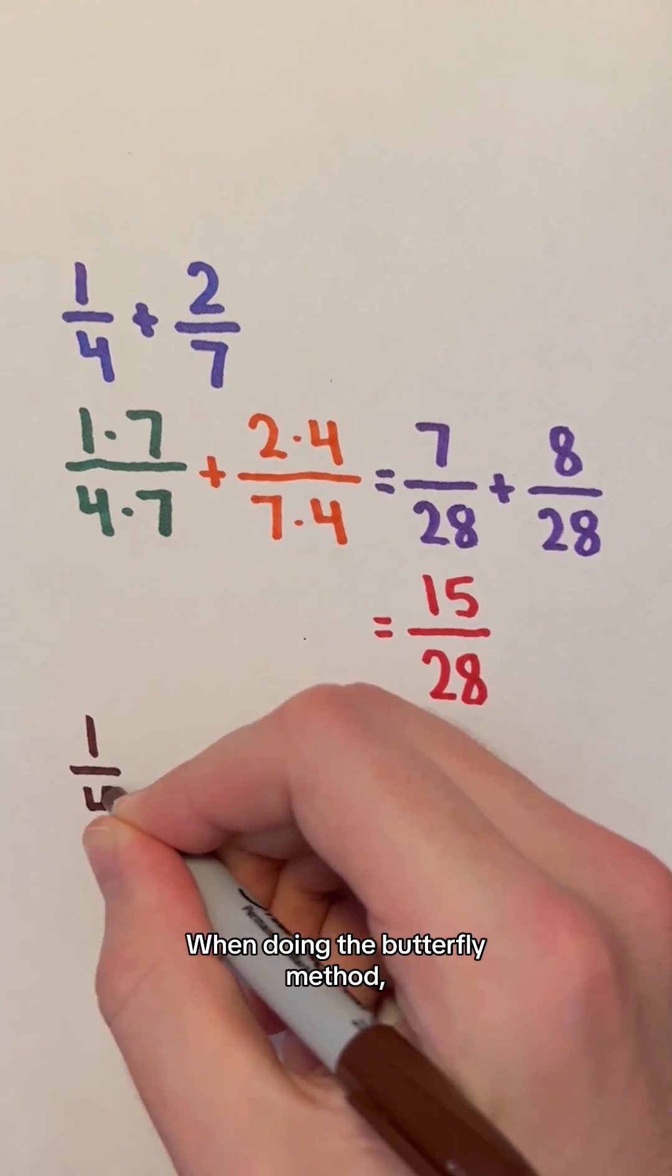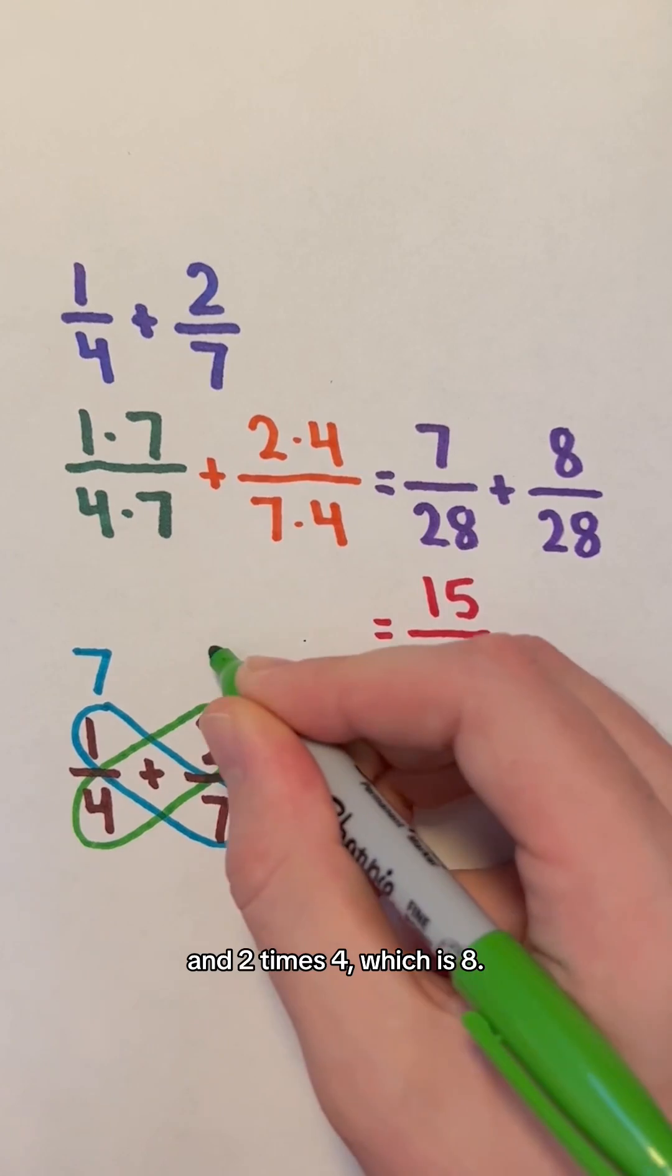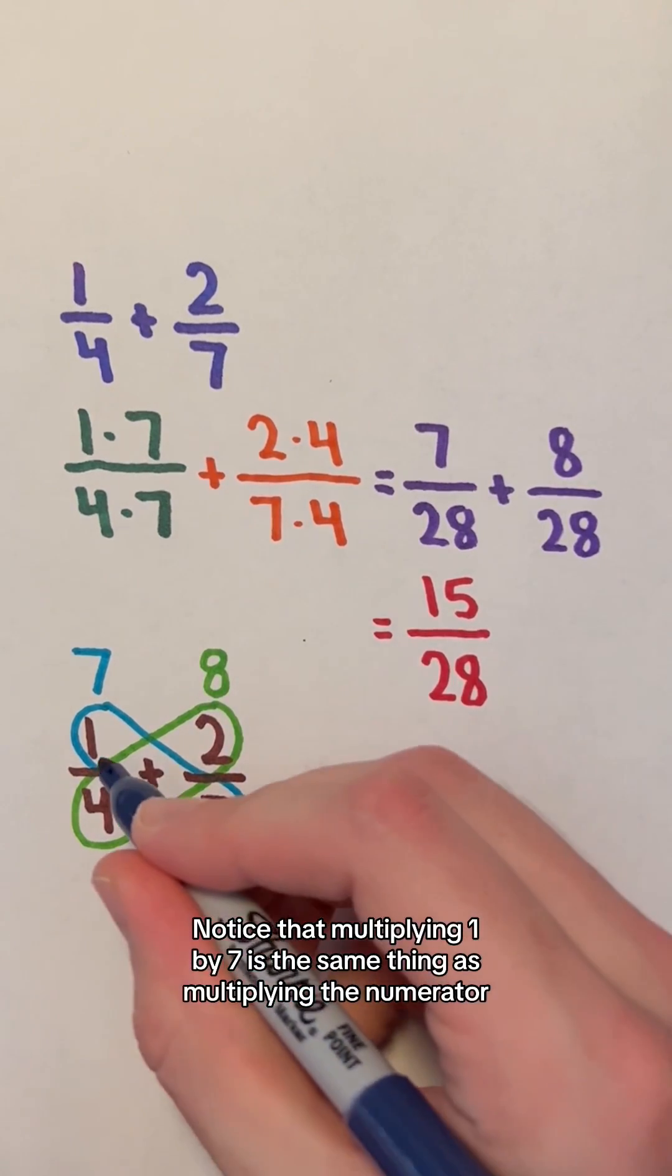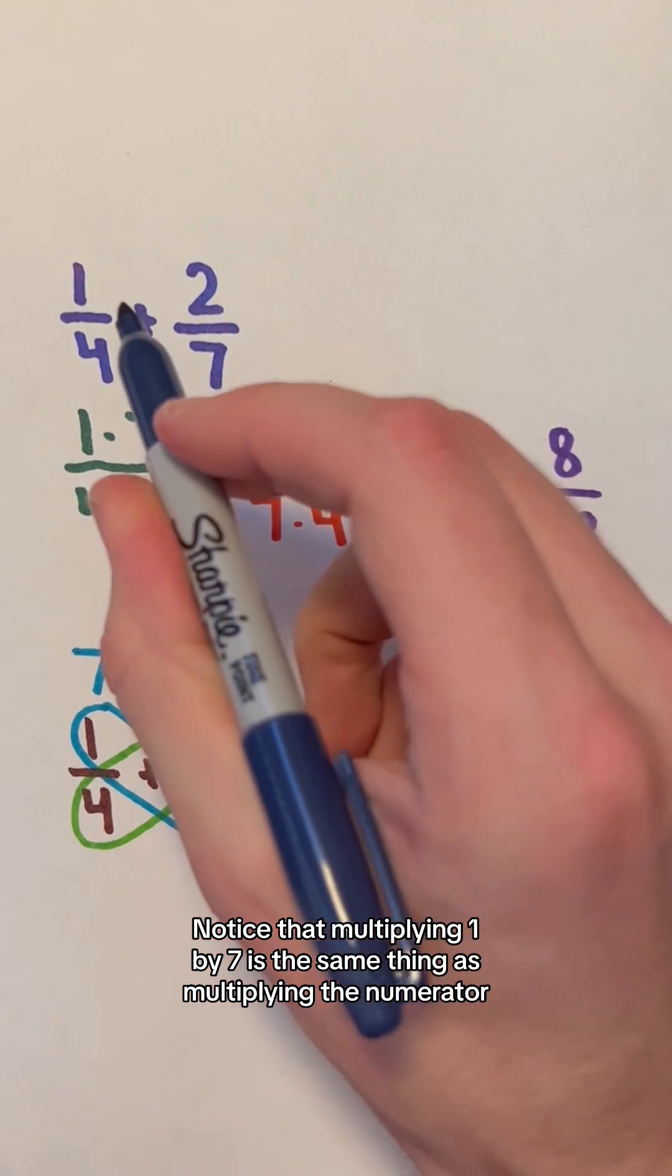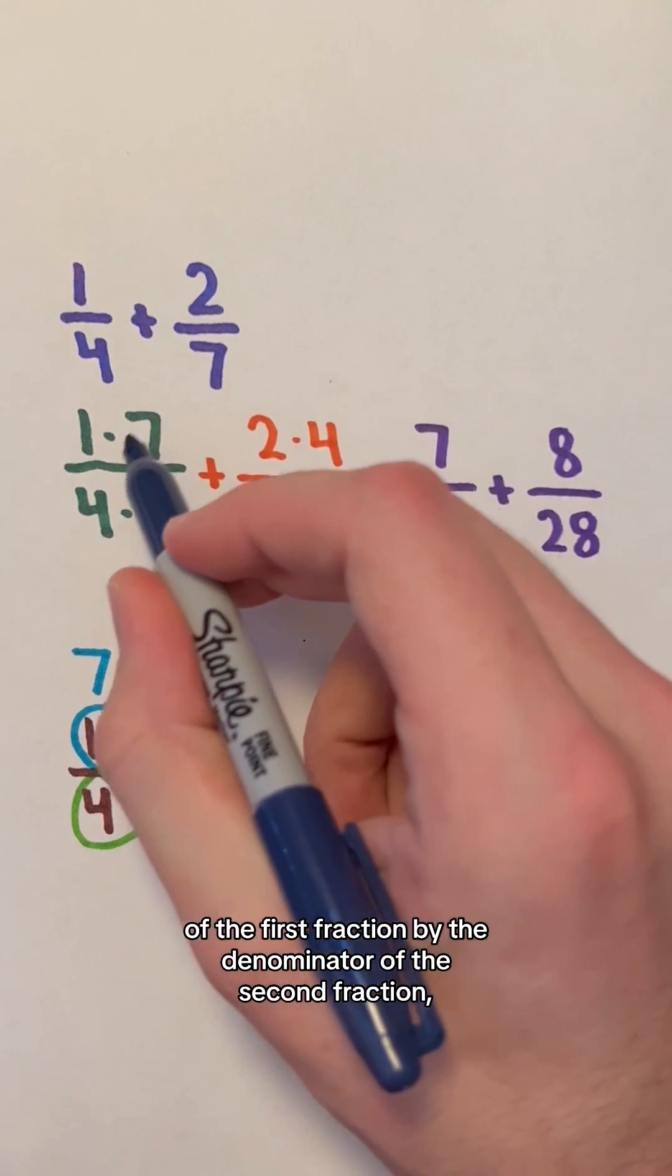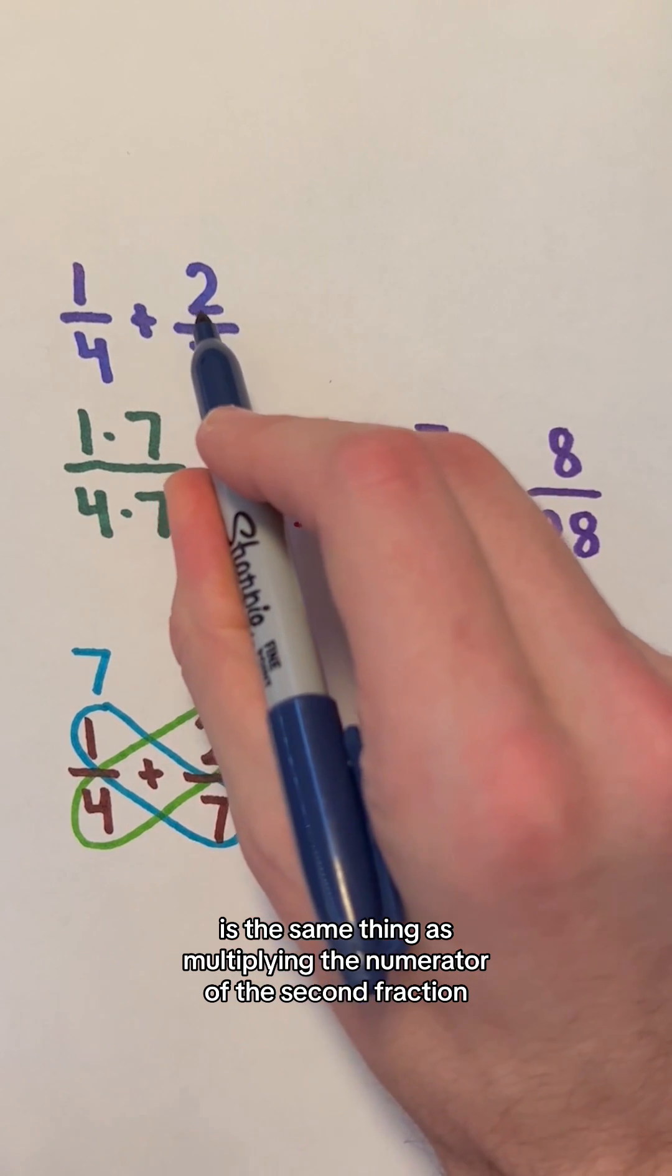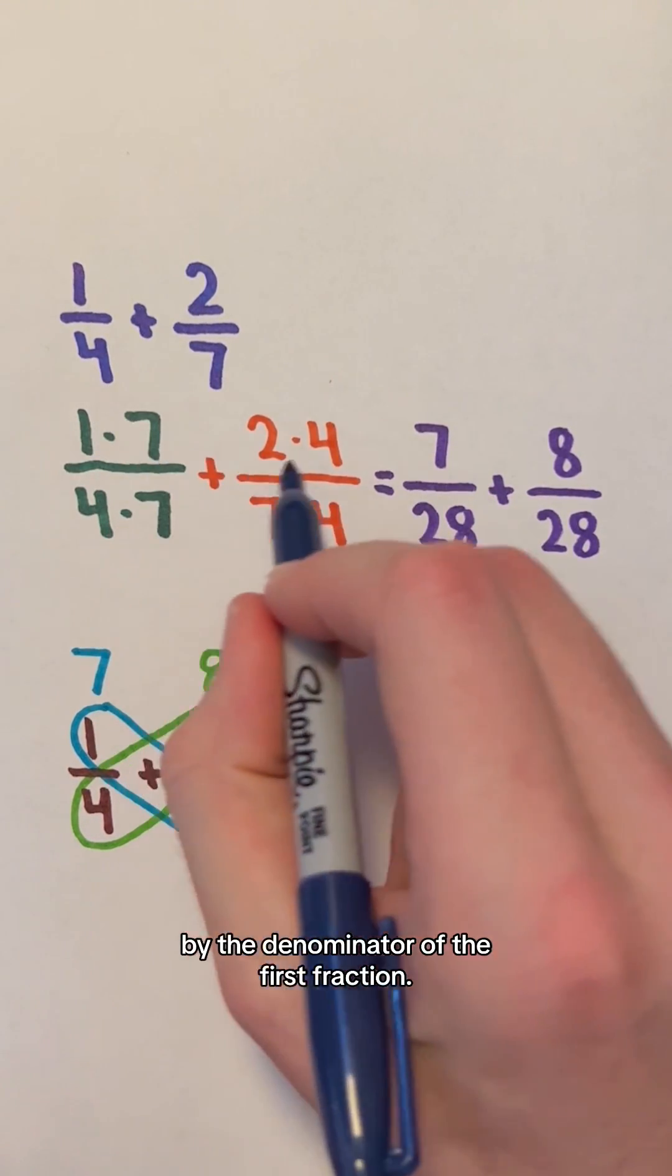When doing the butterfly method, you first cross multiply. So 1 times 7 which is 7, and 2 times 4 which is 8. Notice that multiplying 1 by 7 is the same thing as multiplying the numerator of the first fraction by the denominator of the second fraction. And multiplying 2 by 4 is the same thing as multiplying the numerator of the second fraction by the denominator of the first fraction.